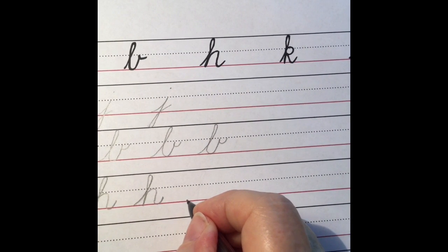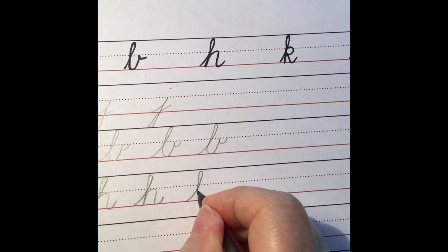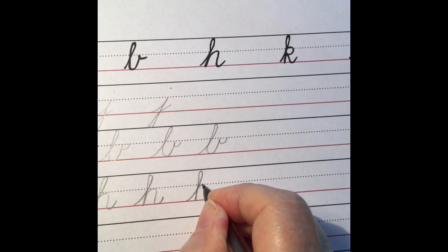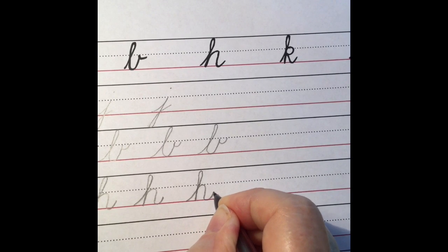One more time. A two-space loop, a slant line down, trace up the slant line with an overcurve, slant, undercurve.